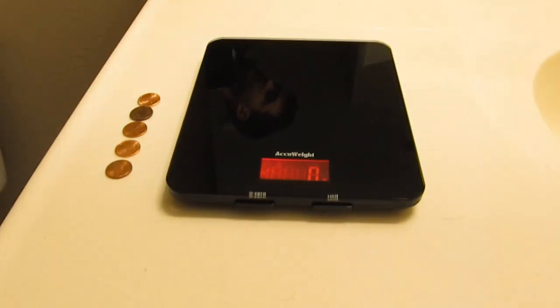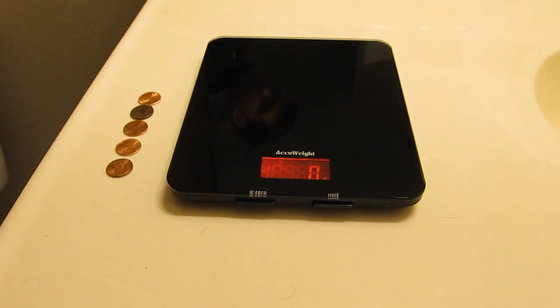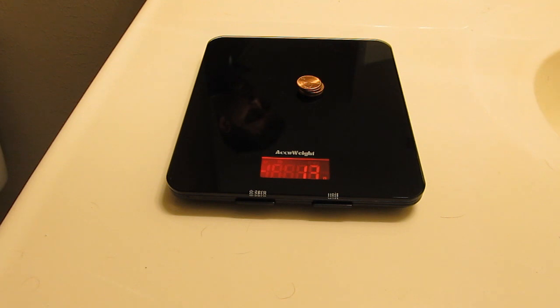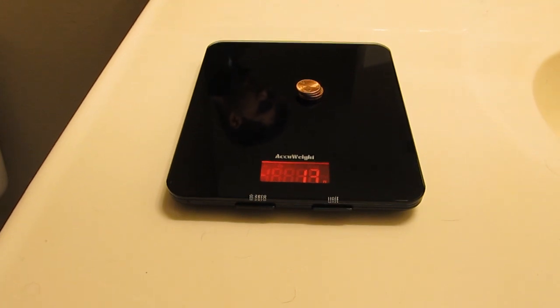We need to find the mass of a penny. To do this, I used a scale and measured the mass of 5 pennies. 5 pennies weigh about 0.013 kilograms. This means that each penny weighs about 0.0026 kilograms, or in other words, 2.6 grams.